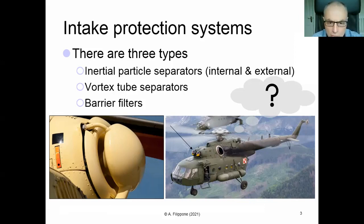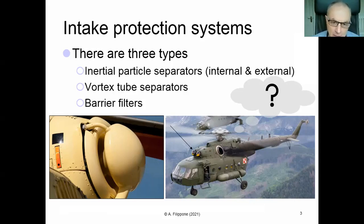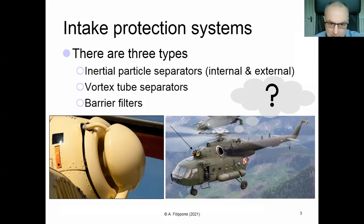The second system is called the vortex separator — an American technology applied to a number of helicopters, particularly the Chinook, which has a big pack of vortex tubes on the outside of the engine. Finally, there are the barrier filters, which are essentially filters stuck in front of the engine that separate the flow — the particulate gets stuck in the filter, the filter gets clogged, and eventually it has to be cleaned.